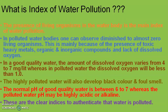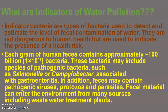Highly polluted water also develops a black color and a foul smell. The normal pH of good quality water is between 6 and 7, whereas the pH of polluted water is highly acidic or highly alkaline. The occurrence of such different parameters clearly indicates that the water is polluted or highly polluted.